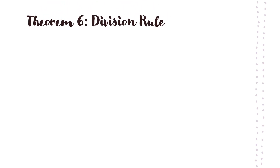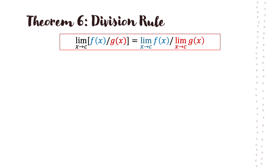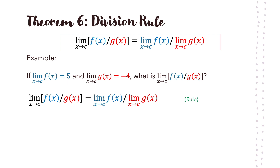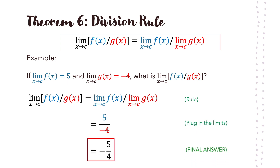Theorem number 6 is about division. For example, if the limit of f(x) equals 5 and the limit of g(x) equals negative 4 as x approaches c, and we want the limit of f(x) divided by g(x) as x approaches c — we apply the rule, plug in the individual limits, and solve. The limit will be negative 5 fourths.